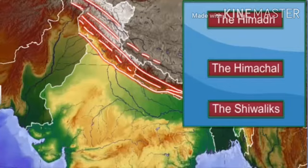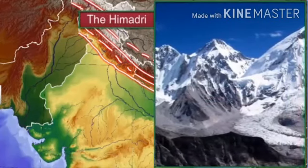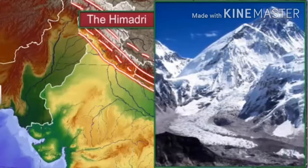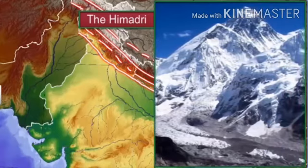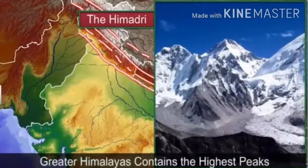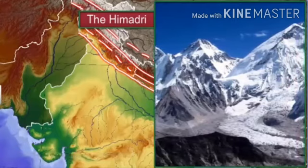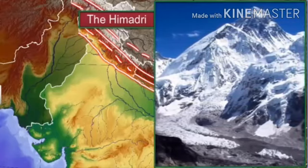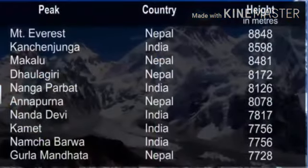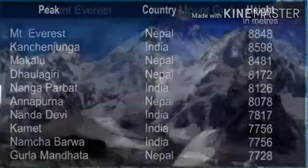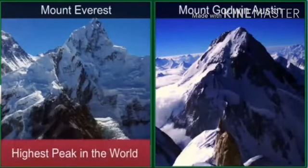The Himadari, also called the Great or Inner Himalayas, is the northernmost range of the Himalayas. This range is in a single, unbroken line and has the highest peaks. The average height of peaks in the Himadari is 6,000 meters. It is not surprising that the important peaks of the Himalayas are located in this range — for example, Mount Everest, the highest peak in the world, and Mount Godwin-Austin, the second highest peak in the world, are all part of this range.